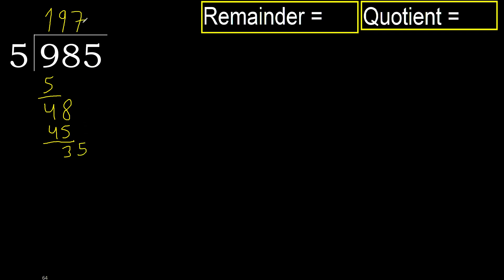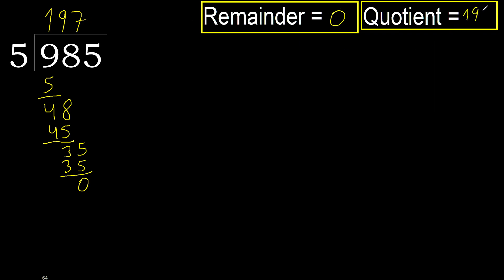5 multiplied by 7 is 35, which is not greater. Subtract. That is not a remainder, therefore finish it. 985 divided by 5 is 197. Now across the factor.